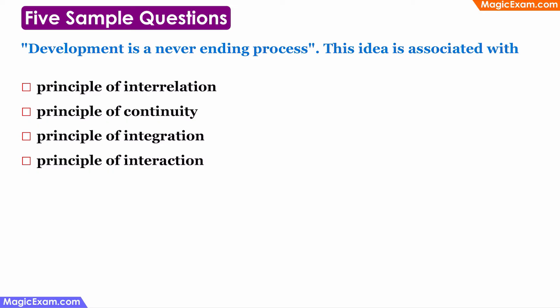Now let us look at some sample questions from previous question papers. The first question is: development is a never-ending process — this idea is associated with which principle? We have seen that development is a continuous process which does not stop anywhere and is never-ending. Therefore, development is a never-ending process is associated with the principle of continuity.